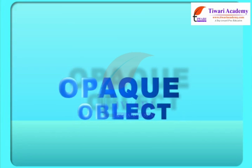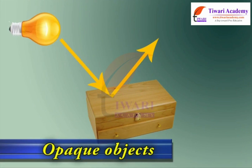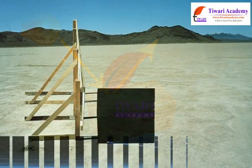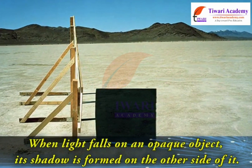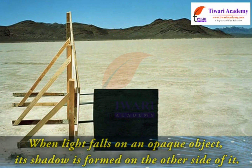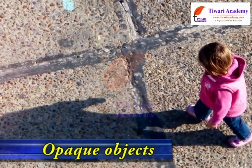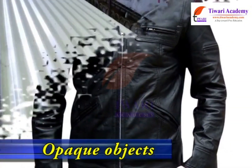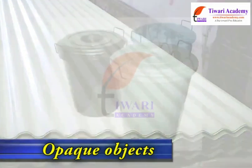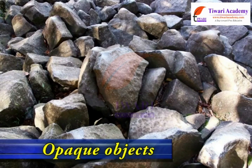An opaque object is a non-luminous object. Objects that do not allow any light to pass through them are called opaque objects. As a result, we cannot see through them. When light falls on an opaque object, its shadow is formed on the other side of it. Wood, human body, leather, sheets of metal, dark-colored plastics, and rocks are some examples of opaque objects.